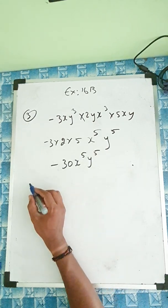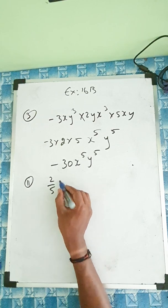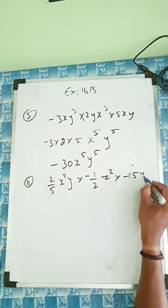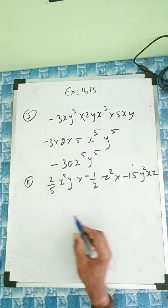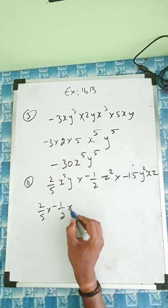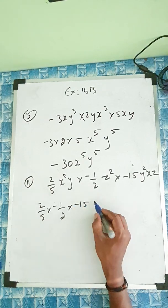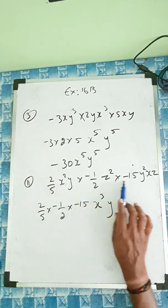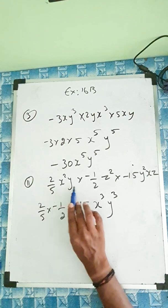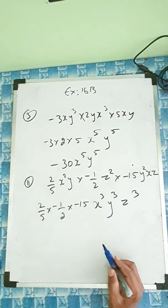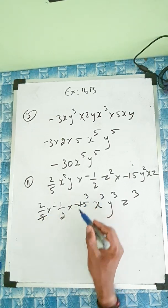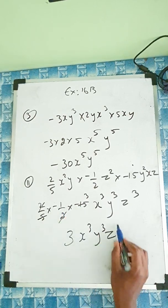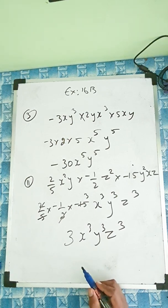Second question: 2 by 5 x squared into minus 1 by 2 z squared into minus 15y squared xz. Writing the numbers: 2 by 5 times minus 1 by 2 times minus 15. For x: 2 plus 1 is 3. For y: 2 is here, power 3 total? Actually y cubed and z: 2 plus 1 is 3. Cancelling: 5 and 15 cancel by 3, 2 and 2 cancel; minus times minus is plus. Answer: 3x cubed y cubed z cubed.